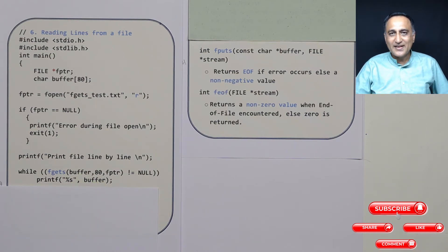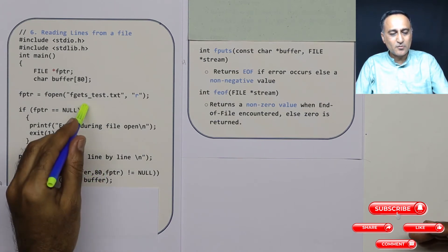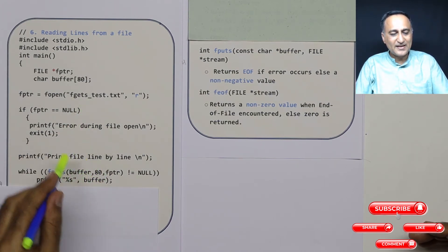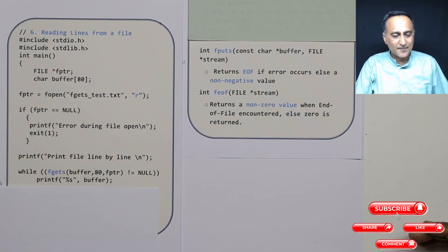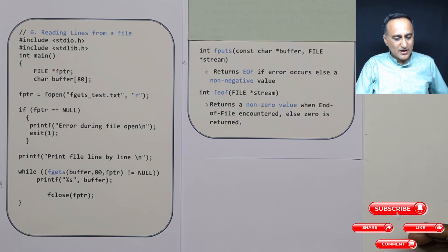So fgets reads line by line, a maximum of 79 characters, adds a null character from this particular file, and that data is stored into this particular array. And then I am printing this particular file. And using fclose, I am indicating that I am done reading my file.